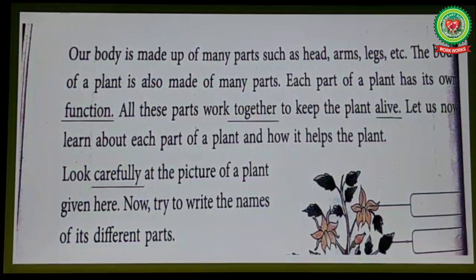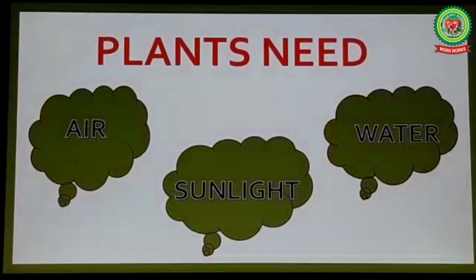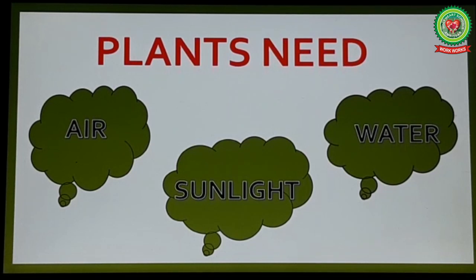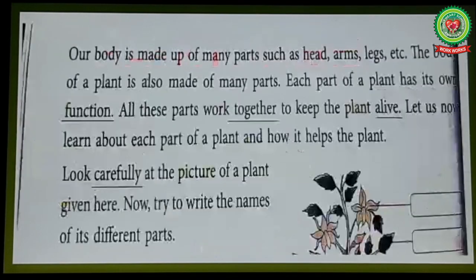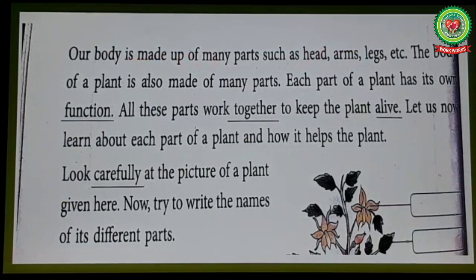Let us now learn about each part of a plant and how it helps the plant. Plants are living things like human beings and animals. They also need air, water and sunlight to grow. Plants are made up of different parts. Now look carefully at this picture of a plant and try to write the names of its different parts.